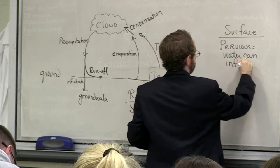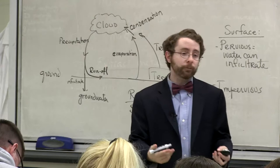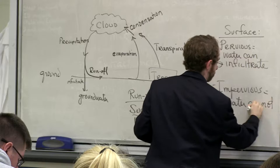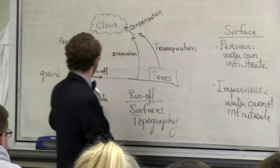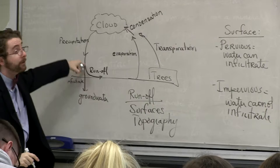The other type is impervious. If pervious means water can infiltrate, impervious means water cannot infiltrate. So if I have a pervious surface, I can get groundwater. If I have an impervious surface, the water's not going to go into the ground — it's going to come off as runoff.